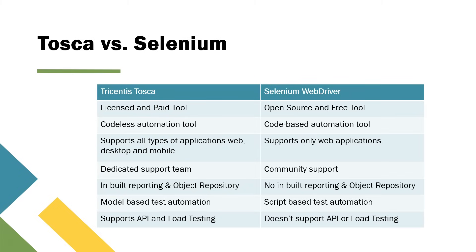There is a dedicated support team for Tosca if you come across any issues, but in Selenium you will only have community support. Tosca comes with inbuilt reporting and object repository features, but there is no such feature for reporting and object repository in Selenium WebDriver. Tosca is built upon model-based test automation, while Selenium is script-based — in Selenium you have to write all the scripts, but in Tosca you build different modules to drive your automation. Tosca also supports API and load testing, but there is no such out-of-the-box support in Selenium.